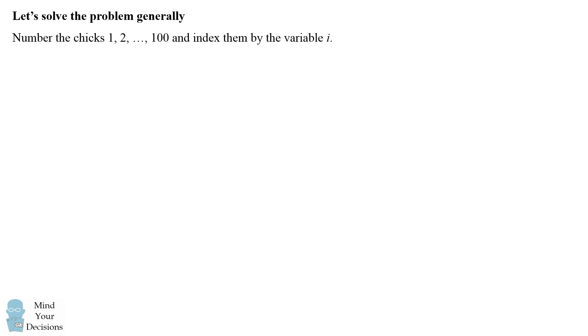We'll number the chicks from 1 to 100 and index them by the variable i. We'll define a random variable x sub i to equal 0 if the chick is pecked and 1 if the chick is unpecked.